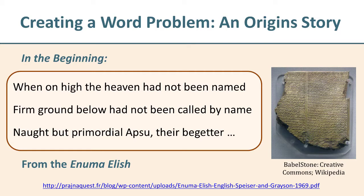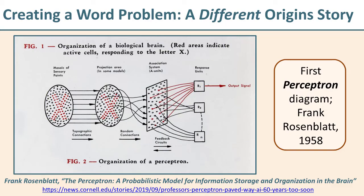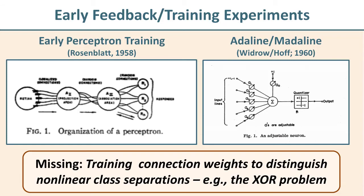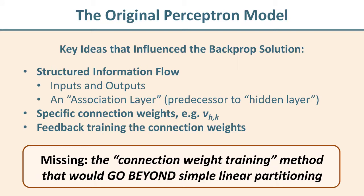If we go back as far as the Enuma Elish — probably the oldest origin story in the world — we see it starting off with 'when on high the heaven had not been named.' But maybe we don't need to go back that far. Maybe we just need to go back to the Perceptron as originally envisioned by Frank Rosenblatt in 1958. Our origin story begins in the very late 1950s with Frank Rosenblatt inventing the Perceptron, and within a short time, in 1960, Bernie Widrow and his graduate student Marcian Hoff invented the ADALINE, and for multiple ADALINEs together, MADALINE neural networks.